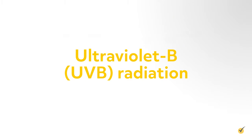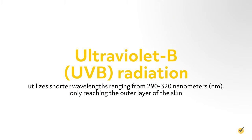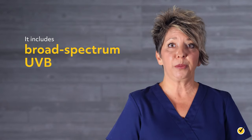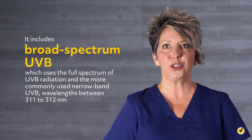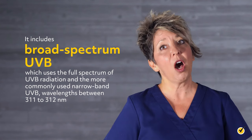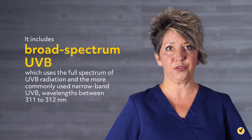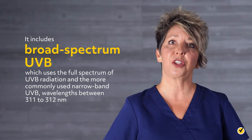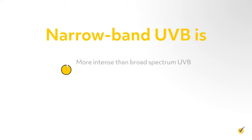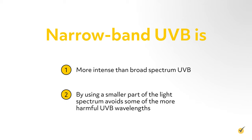Ultraviolet B radiation utilizes shorter wavelengths ranging from 290 to 320 nanometers, only reaching the outer layer of the skin. It includes broad-spectrum UVB, which uses the full spectrum of UVB radiation, and the more commonly used narrowband UVB at wavelengths between 311 to 312 nanometers. Narrowband UVB is more intense than broad-spectrum UVB and, by using a smaller part of the light spectrum, avoids some of the more harmful UVB wavelengths.